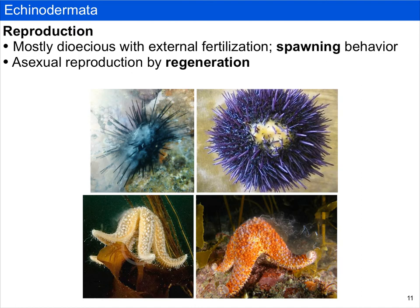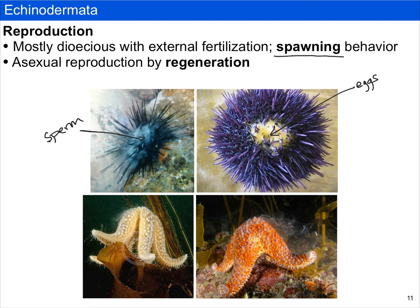Echinoderms are mostly dioecious, with separate male and female sexes and external fertilization. They tend to aggregate and then release their gametes at the same time — this is called spawning. In the photos shown here, a purple sea urchin is releasing eggs, while another sea urchin is releasing sperm. When sea stars spawn, they tend to fold into a particular shape, and you can see sperm being released in the bottom right image.